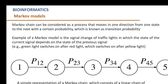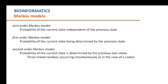A simple linear state representation: a green light switches on after red light, which switches on after yellow light. If it moves from one to two, probability of one to two; probability of two to three; three to four and four to five. We have zero order, first order, second order, and in gene prediction it goes to fifth order Markov model. Zero order is independent of the previous state. First order is dependent on one previous state, and second order Markov model means the present state is dependent on two previous states.